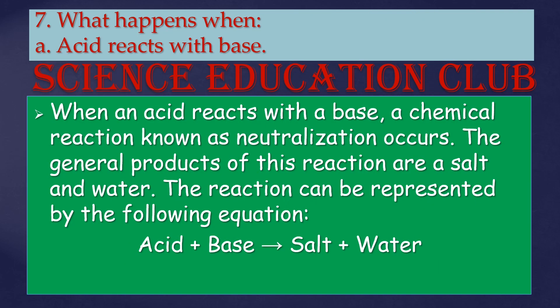What happens when acid reacts with base? When an acid reacts with a base, a chemical reaction known as neutralization occurs. The general products of this reaction are salt and water. The reaction is represented as: acid plus base gives salt plus water.